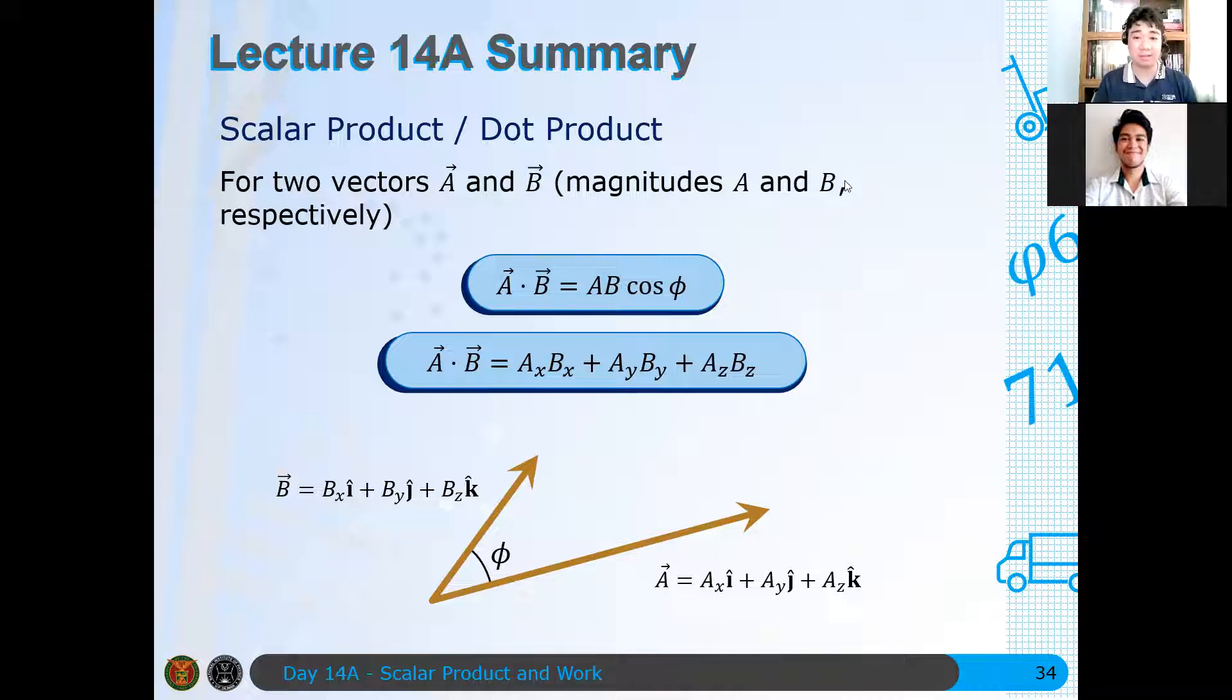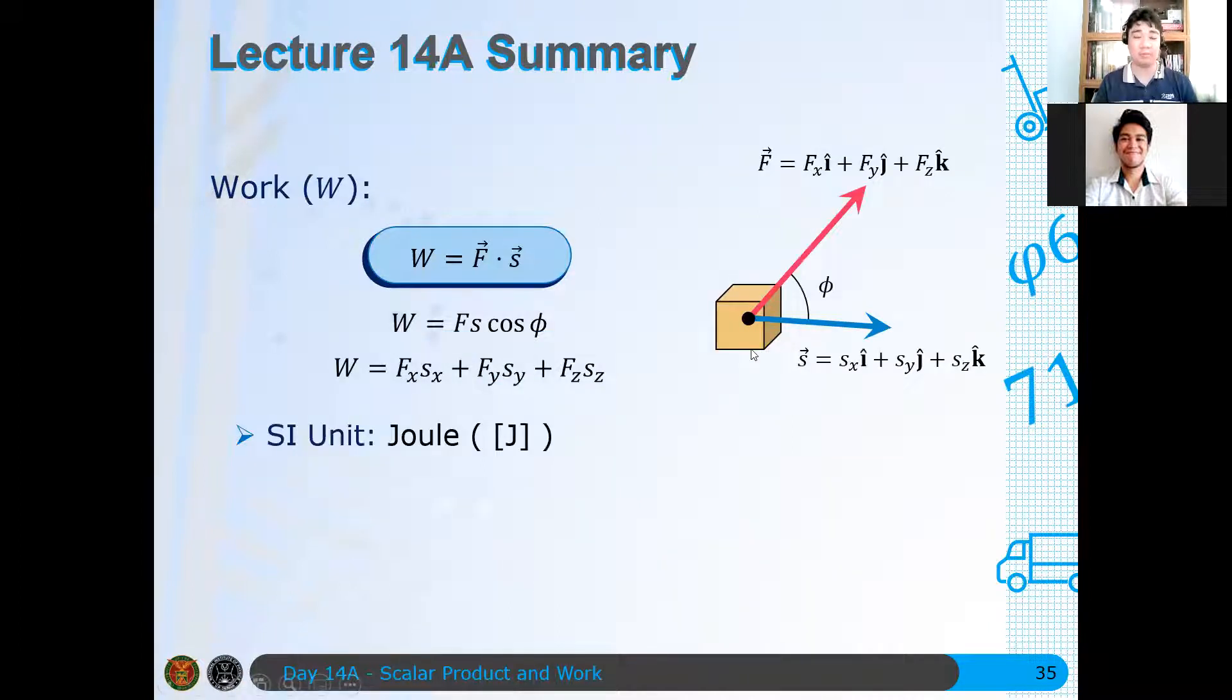Okay, further, we also discussed, we defined what work is. Work is just the dot product of the force and the displacement vector. Hence, if theta is the angle between them, then the work is just the magnitude of the force multiplied by the displacement multiplied by the cosine of the angle between them.